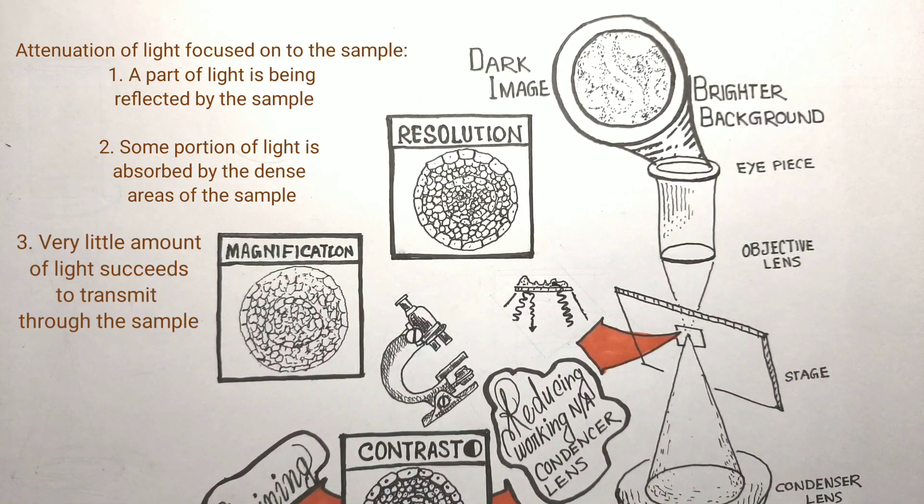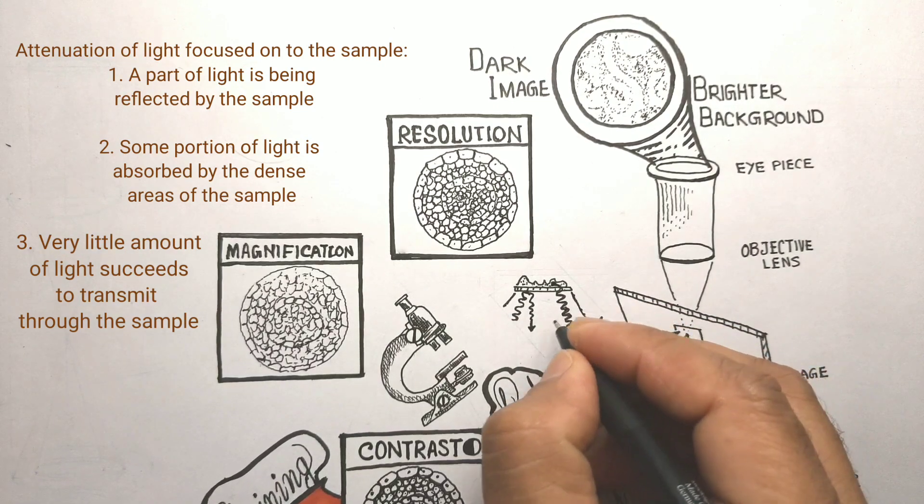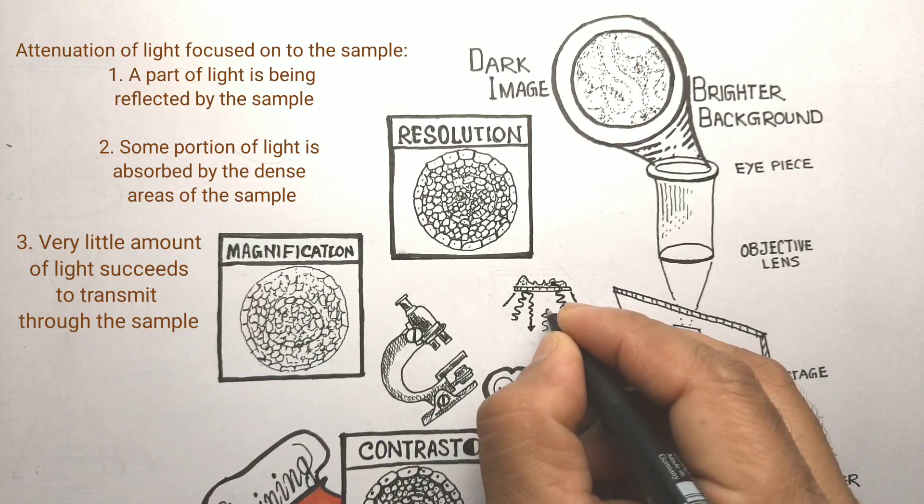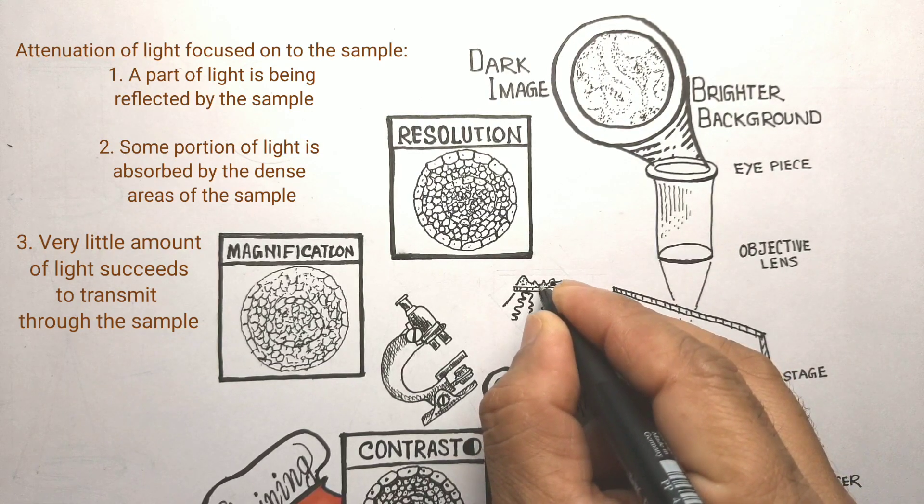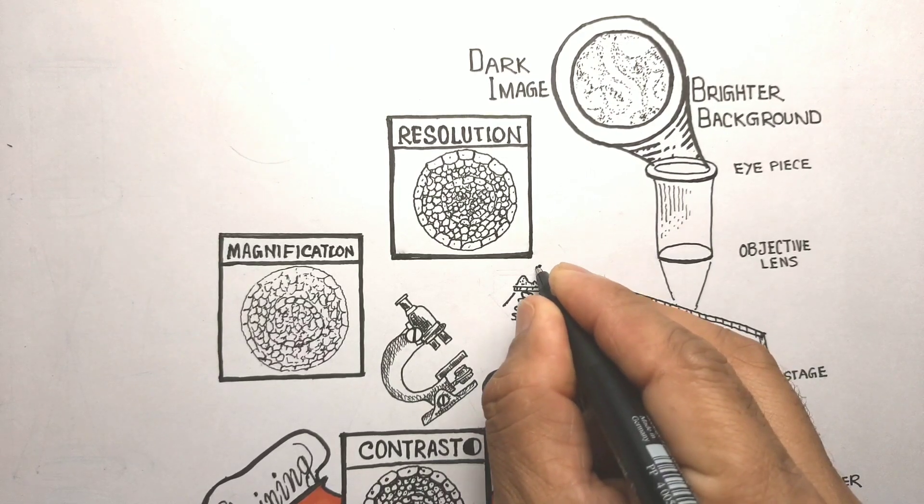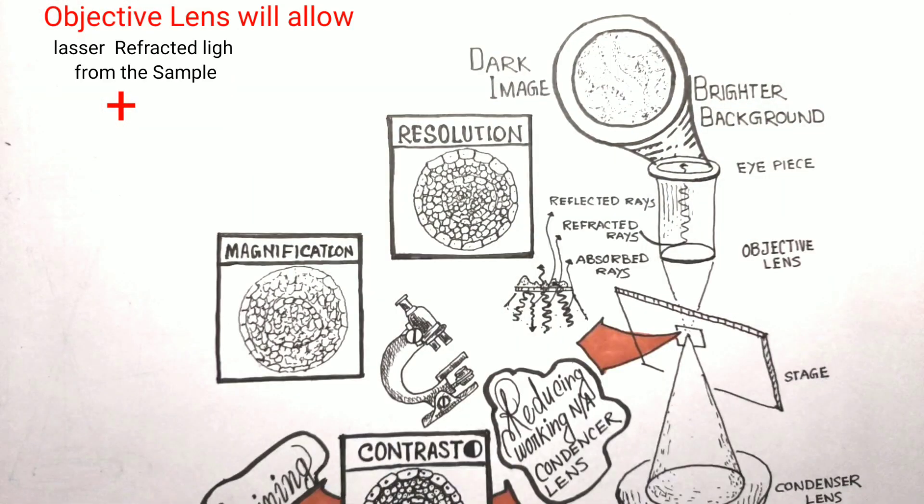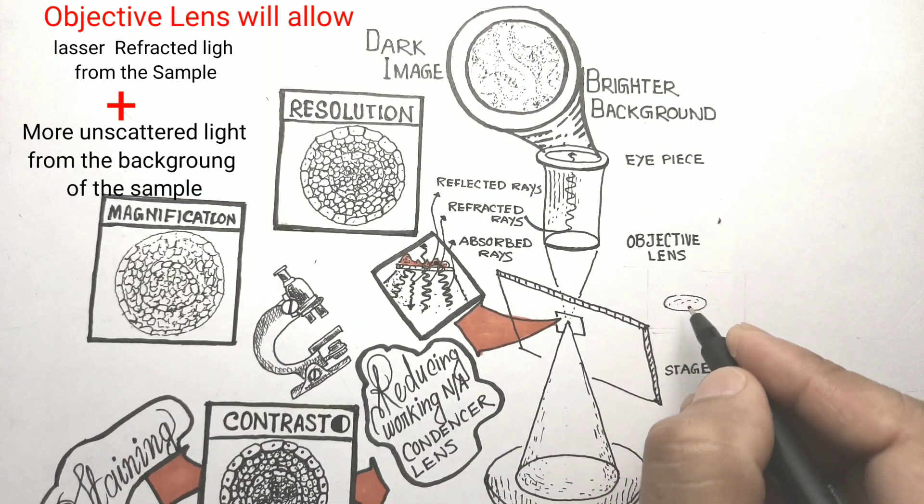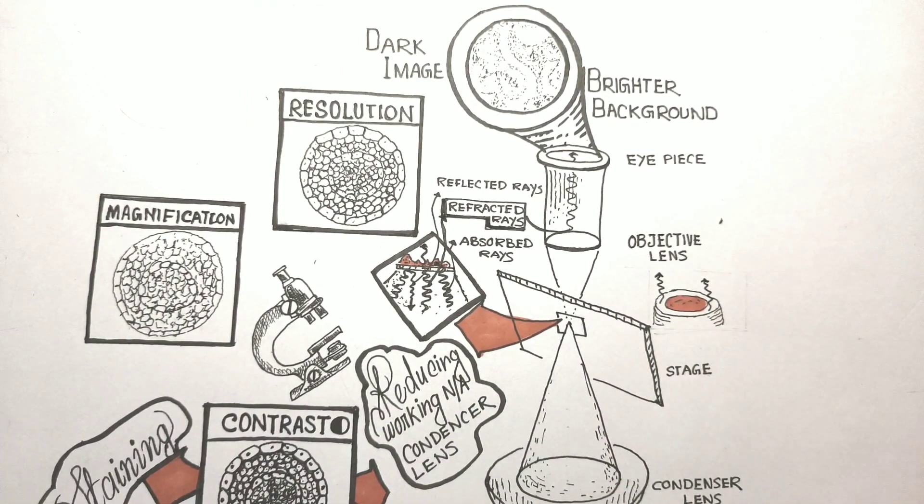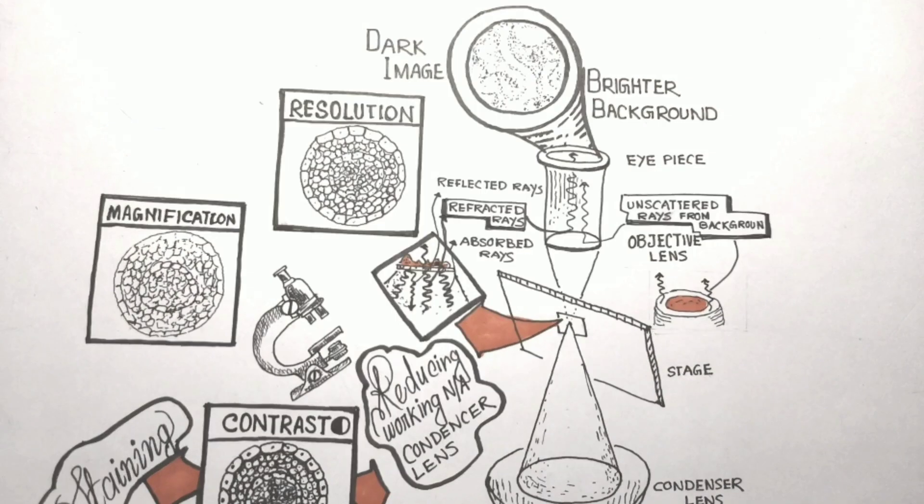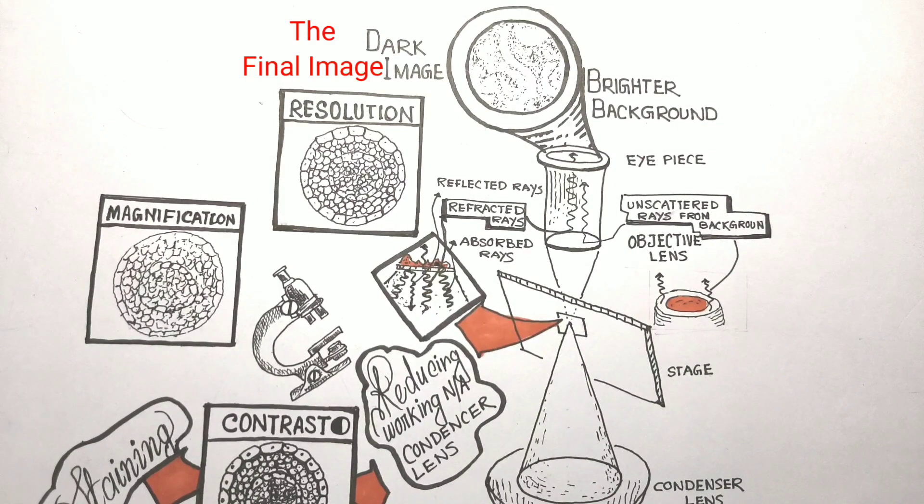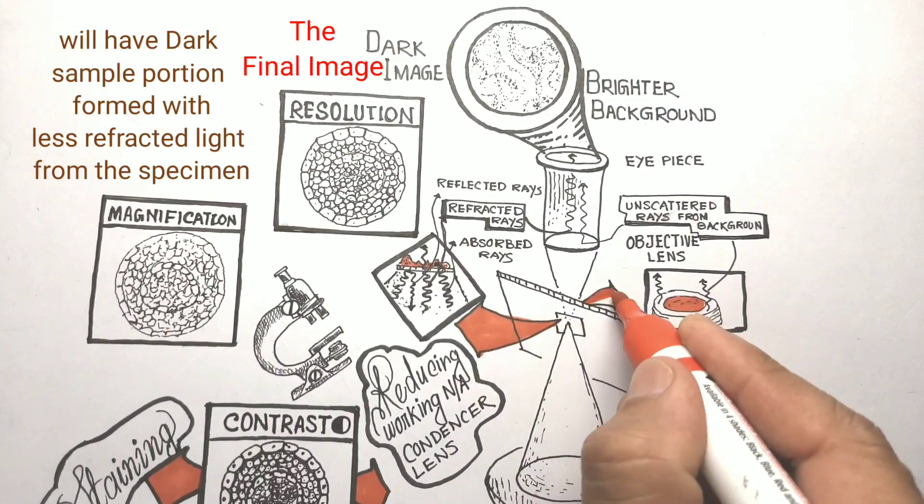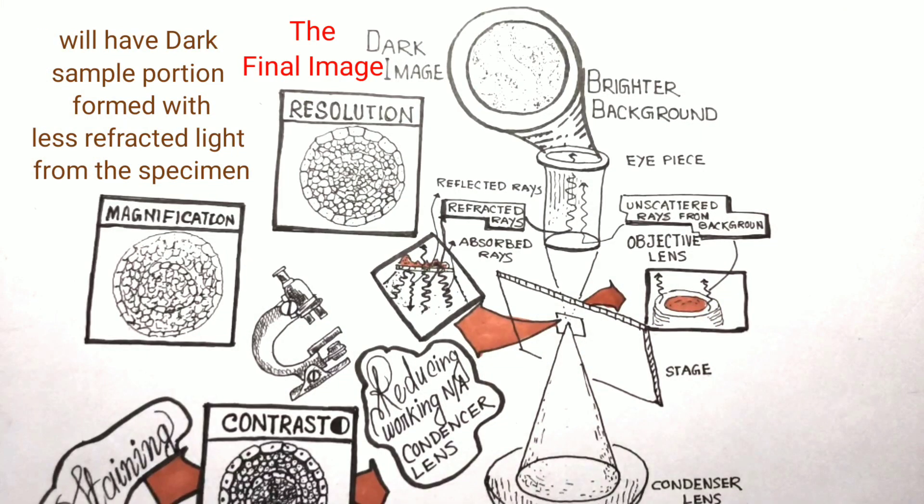Of the light focused onto the sample, some parts are reflected and absorbed, and very little succeeds in transmitting through and is refracted by the sample, which is collected by the objective lens. But along with this lesser amount of refracted light from the sample, a large portion of light from the background is also collected by the objective lens. The background light passes directly without deviation from outside the sample. The final image has a dark sample formed with very little refracted light, and a bright background as comparatively large amounts of undeviated and unscattered light enter the objective lens.